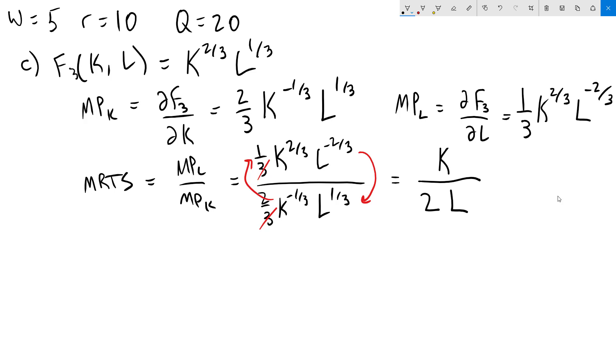We now set this equal to the ratio of the prices of inputs, W over R. Notice that we have kept this consistent, where we had in the MRTS, MPL divided by MPK. So we have to have wage divided by the rental rate of capital. Had we done MPK over MPL, we would just switch and have R over W here. It would make no difference, and either way will get you the right answer. Just like with consumer choice problems, we just have to be consistent about how we're doing it.